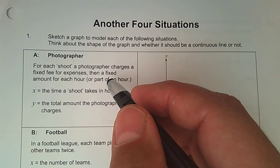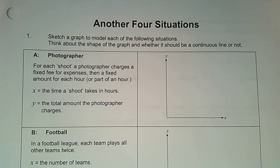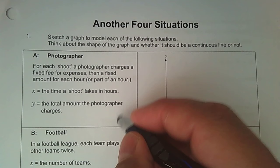So the first situation is a photographer. For each shoot, a photographer charges a fixed fee for expenses, then a fixed amount for each hour or part of an hour. X represents the time it takes and Y is the total amount the photographer charges. So over time, does this increase in cost or decrease? The more time it takes, the more money he charges. So this is an increasing function.